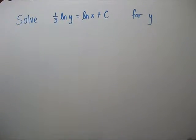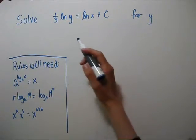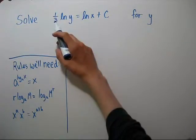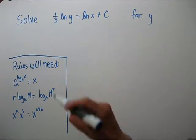Equations similar to these come up in differential equations. To get y by itself, we're going to need to get rid of that one-third and get rid of the natural log.